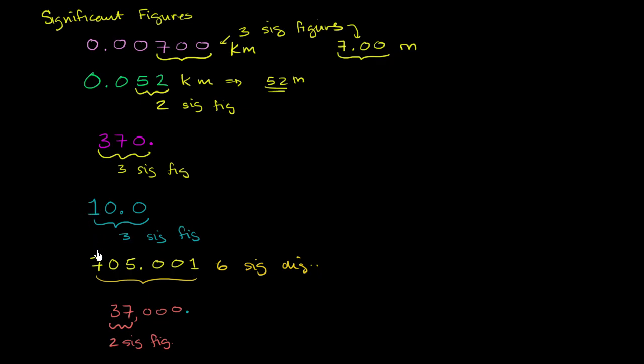So the first thing that is pretty obvious is that any non-zero digit and any of the zero digits in between are significant. Clearly, the 7 and the 5 here are significant, and the zero is in between them, so it's also going to be significant.